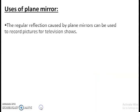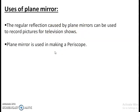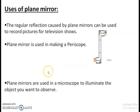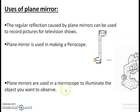Uses of plane mirrors: the regular reflection caused by a plane mirror can be used to record pictures for television shows. The plane mirror is used to make a periscope. If a person is underneath somewhere, he can view what is on top by using plane mirrors. One plane mirror is positioned at the top, another at the bottom — the light comes in, strikes and gets reflected, strikes again, and falls onto the eyes. The same mechanism is used in the microscope to illuminate the object being observed.